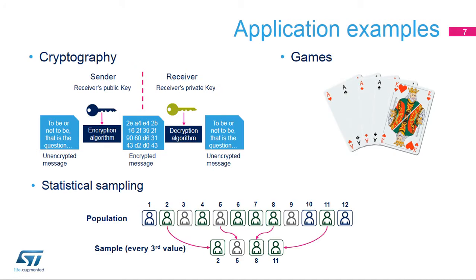The RNG can be used for a wide range of applications, including cryptography, games, and statistical sampling. For example, all the security of cryptography algorithms depends on the impossibility of guessing the key, so the key has to be a random number — otherwise the attacker can guess it.